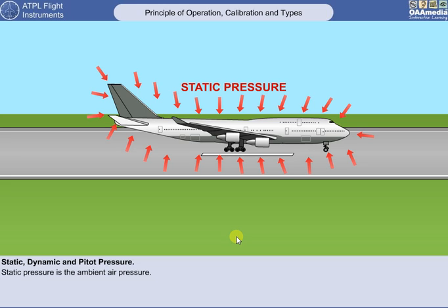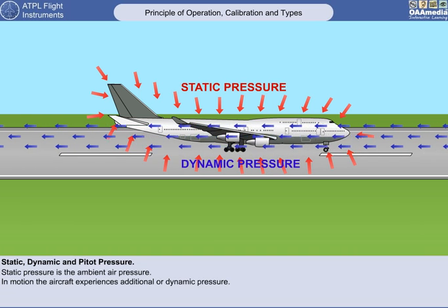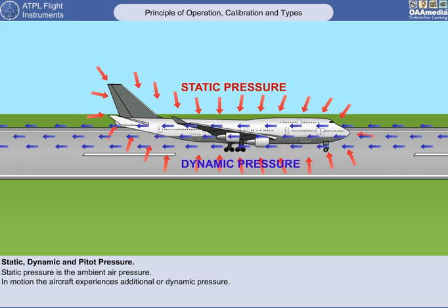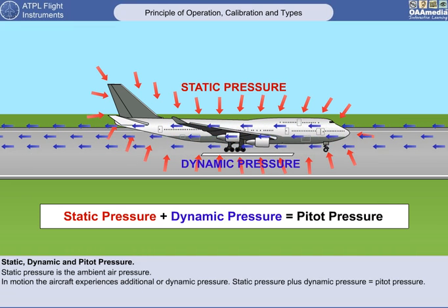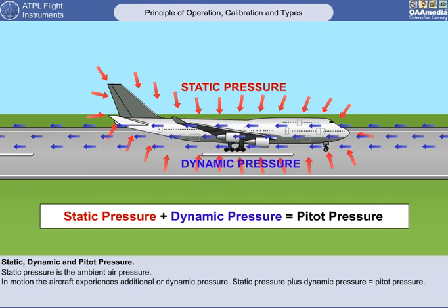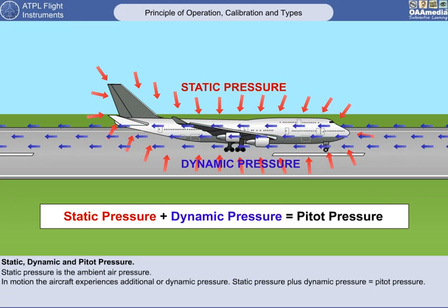The ASI is an air pressure sensing instrument, so let us begin by first considering the air pressure the ASI is required to sense. An aircraft which is stationary on the ground in still air conditions will be subject only to ambient atmospheric pressure, or static pressure, which we can see here represented by the red arrows. In forward motion, the aircraft will be subject to an additional or dynamic pressure, represented here by the blue arrows. The total pressure the aircraft will be subjected to will therefore be the static pressure plus the dynamic pressure. This is known as total pressure or pitot pressure.